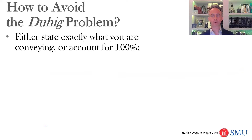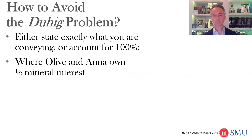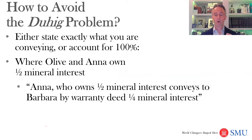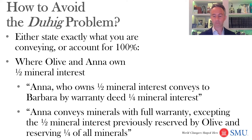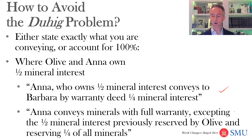Now if Carlos wants to convey and retain an interest, how would you draft the language? The basic answer is: to avoid a Dewey problem, either state exactly what you're conveying accurately, or account for 100%. For example, Anna could say 'Anna, who owns a one half mineral interest, conveys to Barbara by warranty deed a one quarter mineral interest,' leaving the other quarter with Anna. Alternatively, Anna could convey minerals with full warranty, excepting the one half mineral interest previously reserved by Olive, and reserving one quarter of all minerals. Either state what you're conveying, or account for a hundred percent of the interest.